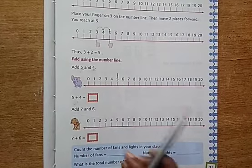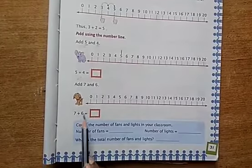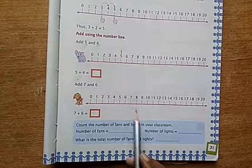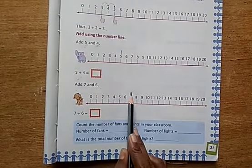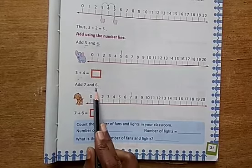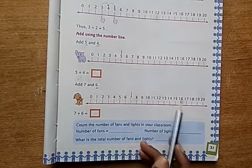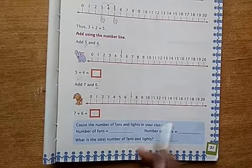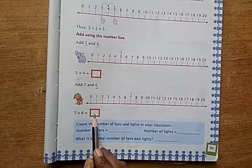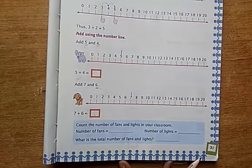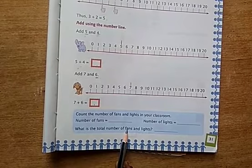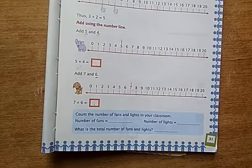Here also, add 7 and 6. Place your finger on 7, then move 6 steps forward from 7. At which number we reached? Write down that answer and check your answer with actual addition. This one also is your work. These three problems are homework to you.